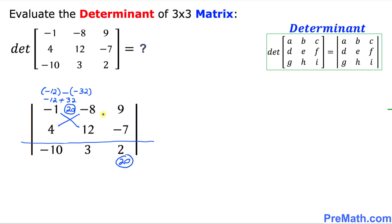Let's take care of the next numbers. Crisscross these as well. Negative 7 times negative 8 is going to be positive 56. Then we put a minus sign and 12 times 9 is 108. Simplifying, that gives us negative 52. So this negative 52 goes in the opposite direction over here.